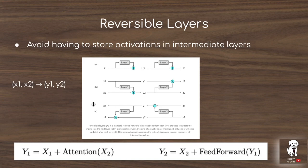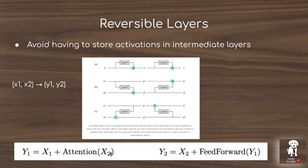You reconstruct x2 by taking y2 and subtracting the output of the feed-forward network given y1, since y2 results from applying the feed-forward network to y1. You pass y1 through the feed-forward network and compute y2 minus that result to get x2. Then you apply the attention layer on x2 to recover x1, and x1, x2 become y1, y2 as you keep propagating backwards.